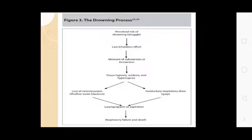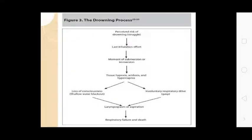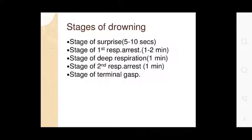Cold water stimulating nerve endings and water striking the epigastrium, and alcohol-induced such effects — mostly seen in suicide cases. The drowning process involves: last-ditch effort at the moment of submersion, tissue hypoxia, acute dyspnea and hypercarbia, then loss of consciousness, involuntary respiratory drive, then laryngospasm or aspiration, then respiratory failure and death.